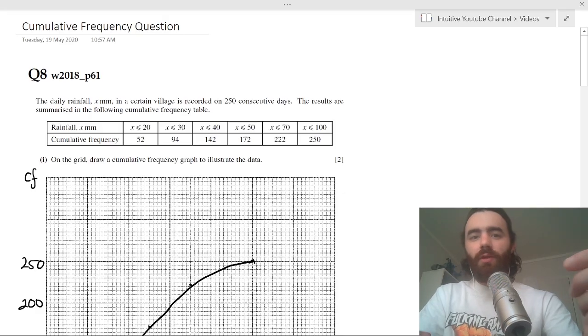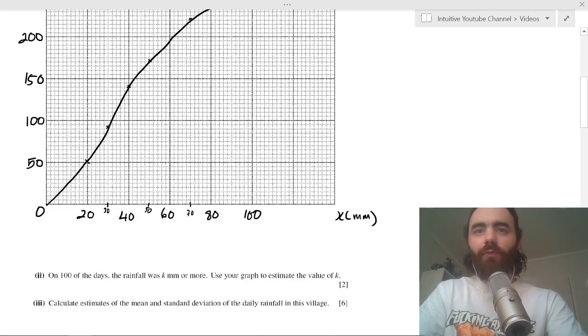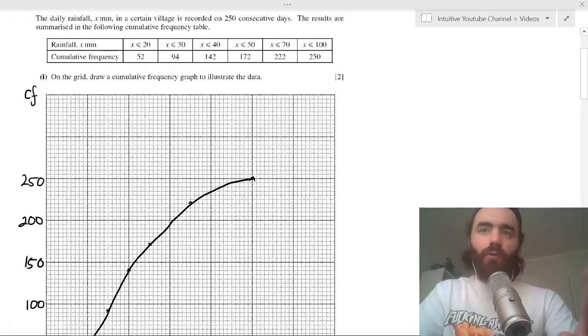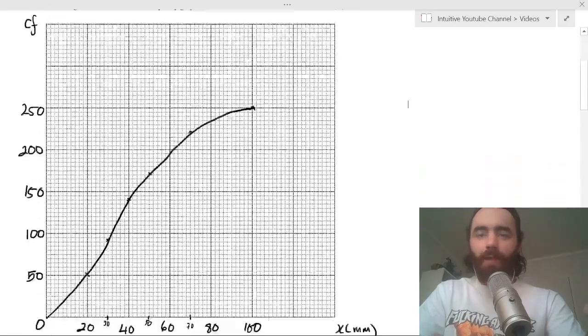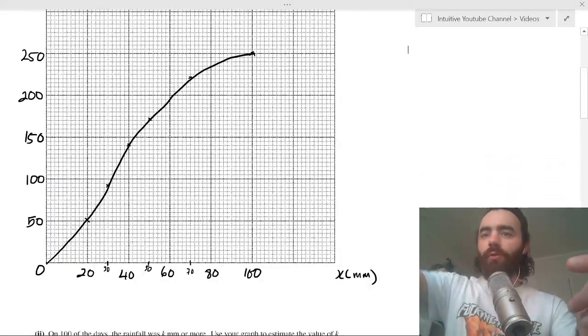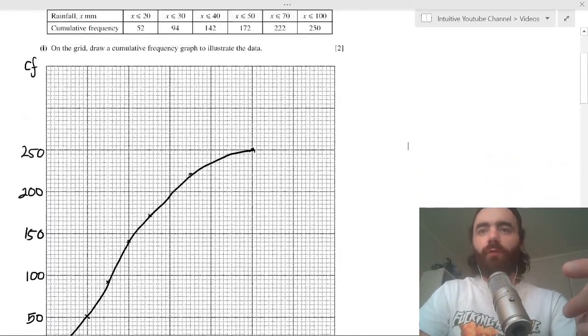All you do is you just plot these values. For example, at x equals 20 is 52, so you plot the point (20, 52), and at 30 you plot 94. You plot all those and then you draw a line through it and you get your cumulative frequency graph.